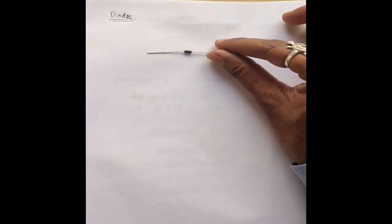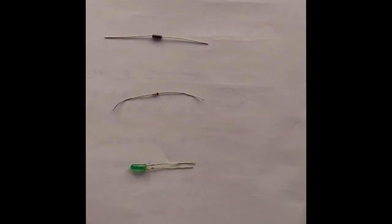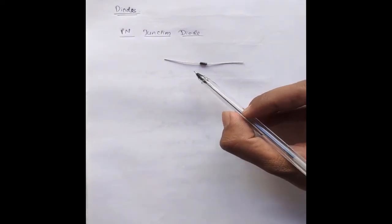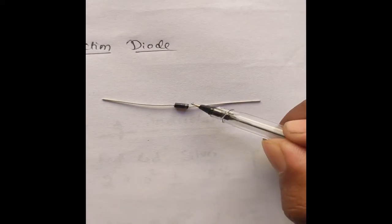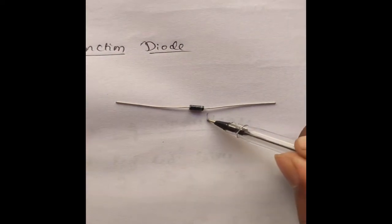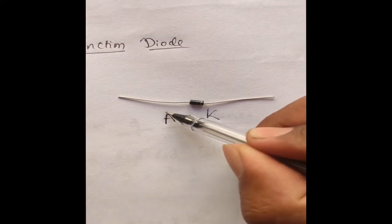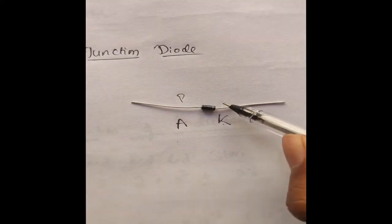A diode is a semiconductor with two terminals which conducts current in one direction only. In our lab we use a few types of diodes: the P-N junction diode, the Zener diode, and the light emitting diode (LED). The P-N junction diode has two terminals — anode and cathode. A white or silver line is coated on one terminal indicating the cathode; the other terminal is the anode. The anode is also called P-type and the cathode is also called N-type.